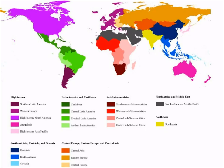How they organized everything: they divided the world into seven geographic regions — the high income region, Latin America and Caribbean, Sub-Saharan Africa, North Africa and Middle East, South Asia, Southeast Asia and East Asia, Oceania, and Central Europe, Eastern Europe and Central Asia. That was the basic outline for all their analysis.